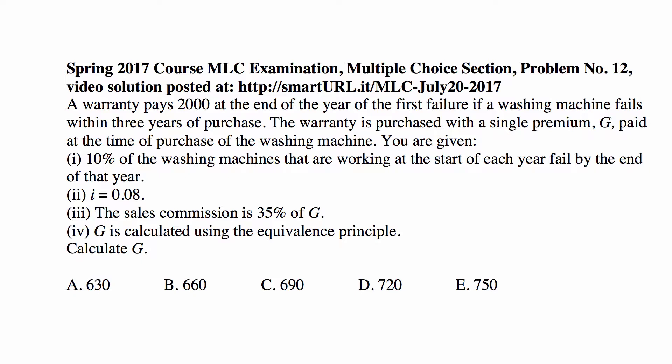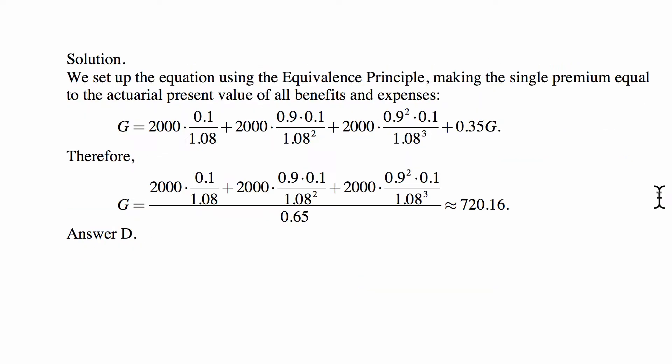The interest rate is 8%, the sales commission is 35% of G, and G is calculated using the equivalence principle. We set up the equation using the equivalence principle, making the single premium equal to the actuarial present value of all benefits and expenses. The benefits are like three-year term life insurance benefits: payable if the washing machine fails during the first year — that's the first part of the sum — during the second year, and during the third year.